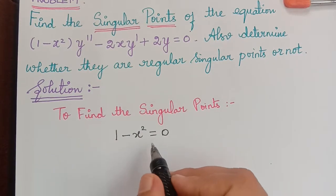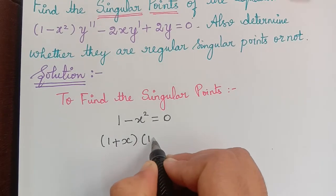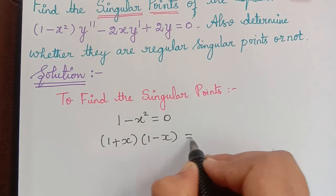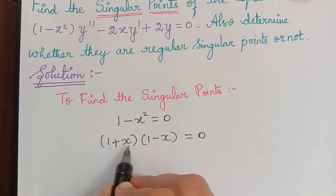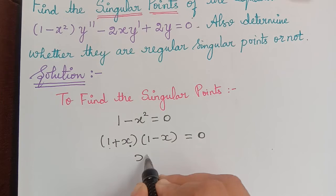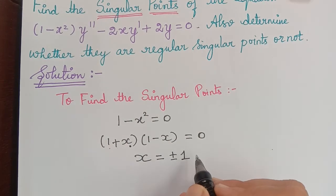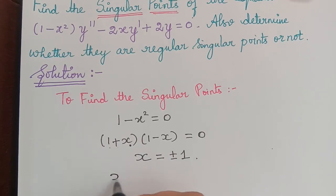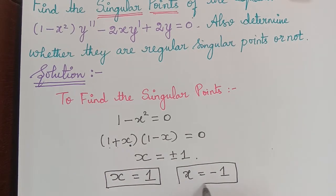We can write 1 minus x squared as (1 plus x)(1 minus x) equal to 0, using the formula a squared minus b squared. From (1 plus x) we obtain x equals minus 1, and from (1 minus x) we obtain x equals 1. Therefore the value of x is equal to plus or minus 1, so the singular points are x equal to 1 and x equal to negative 1.